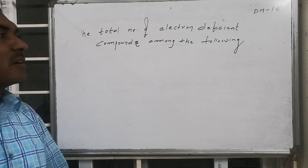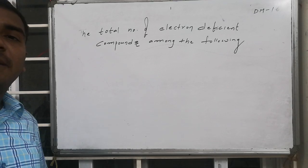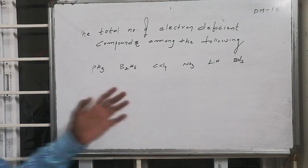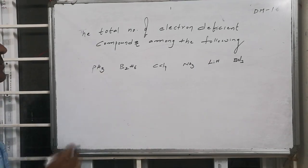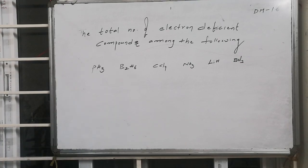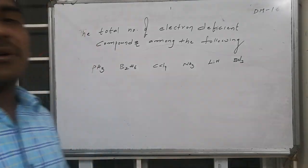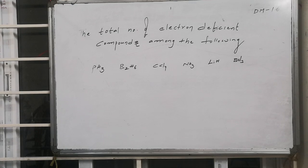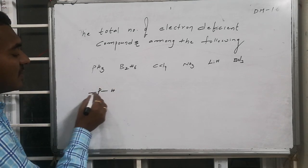The total number of electron deficient compounds among the following - the list of compounds present are: phosphine, diborane, carbon tetrachloride, ammonia, lithium hydride, and boron trichloride. If I write the structure of phosphine...